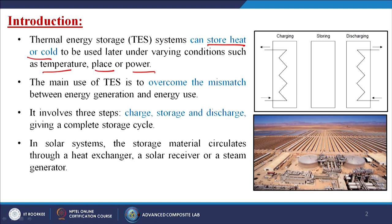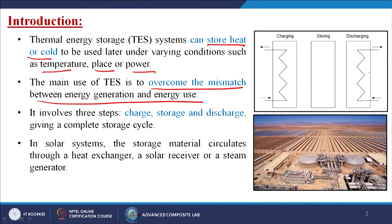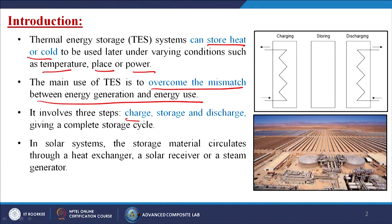The main use of TES is to overcome the mismatch between energy generation and energy use. We are charging a material, storing that particular energy into a system, and then when and where we need that energy, we are taking it out — that means discharging. It involves three steps: charge, storage, and discharge, giving a complete storage cycle.